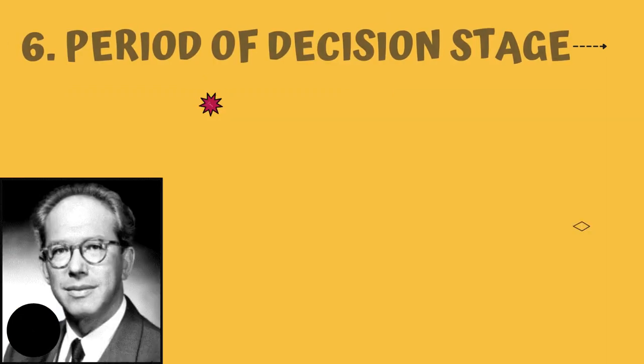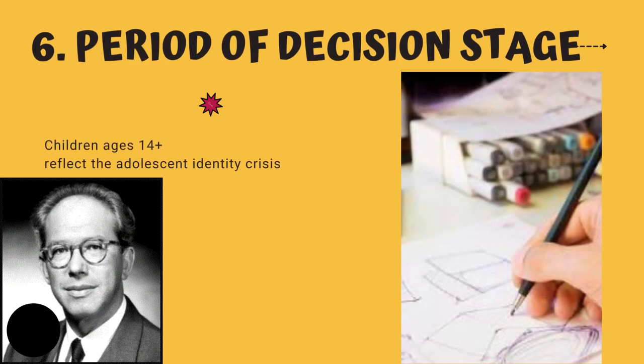That is eleven to thirteen. The sixth and last stage is the period of decision, for children age fourteen and up. This stage reflects the adolescent identity crisis.